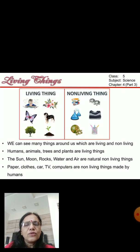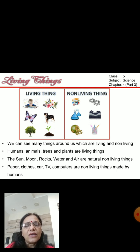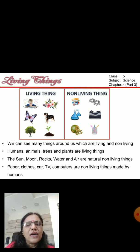As you know, we see many things around us which are living and non-living. You can also see in this picture. Humans, animals, trees and plants are all living things. The sun, moon, rocks, water and air are natural non-living things.